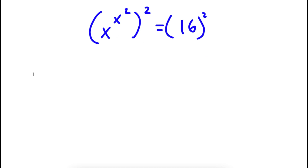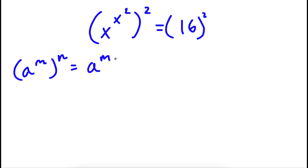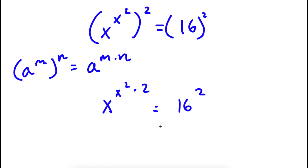Now, if I have something in the form a to the power of m to the power of n, this is the same thing as a to the power of m times n. So x to the power of x squared to the power of 2 is going to equal x to the power of x squared times 2, which is equal to 16 to the power of 2.